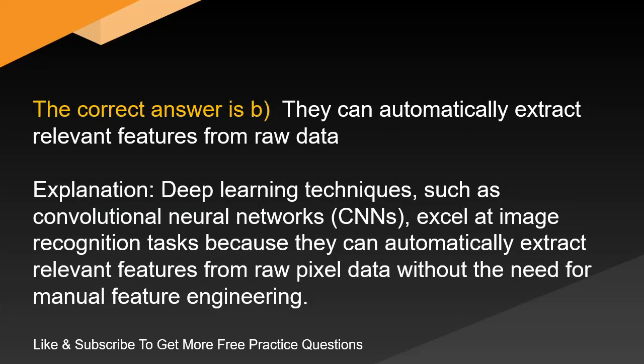The correct answer is B: they can automatically extract relevant features from raw data. Deep learning techniques, such as convolutional neural networks, CNNs, excel at image recognition tasks because they can automatically extract relevant features from raw pixel data without the need for manual feature engineering.